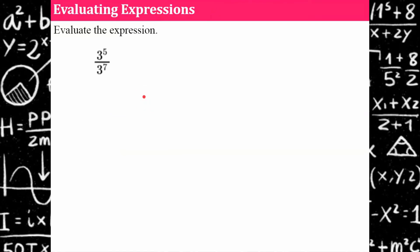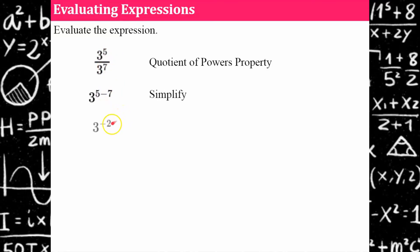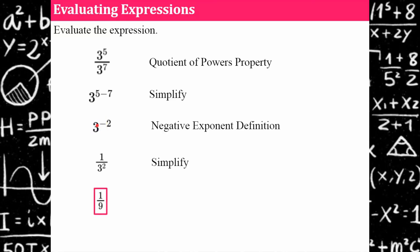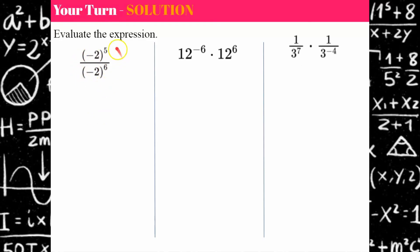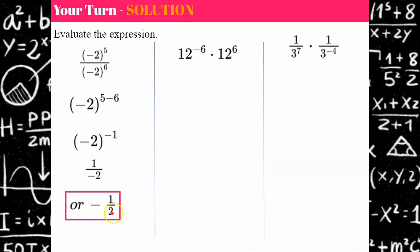Try this one — pause and come back when you're ready. Welcome back. Using the quotient of a power property, we subtract the exponents: five subtract seven gives negative two. Taking the reciprocal gives one third, and squaring it gives one over nine. One third squared is one over nine.